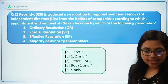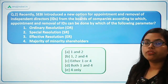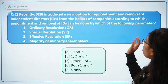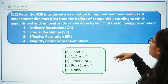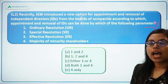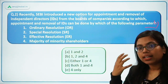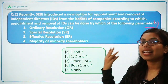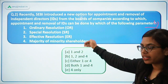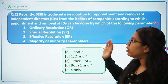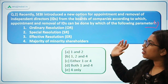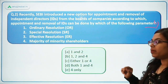Moving on to the second question: recently SEBI introduced a new option for appointment and removal of independent directors from the board of companies. According to this, appointment and removal of IDs can be done by which of the following parameters? The options are: ordinary resolution, special resolution, effective resolution, and majority of minority shareholders. You need to identify the correct ones.